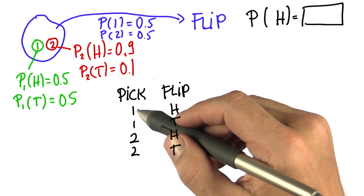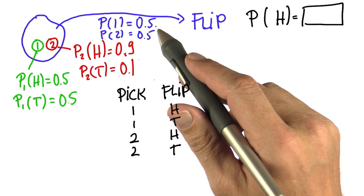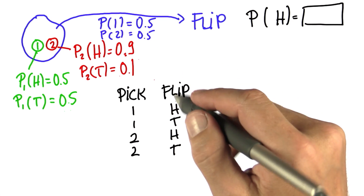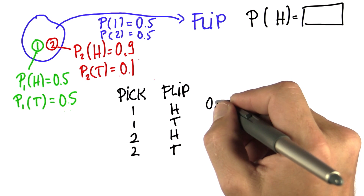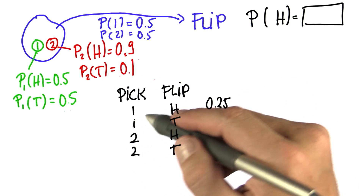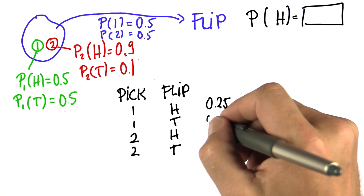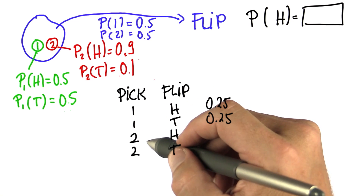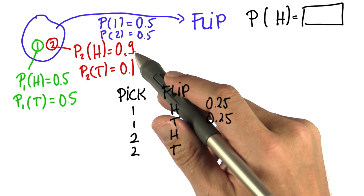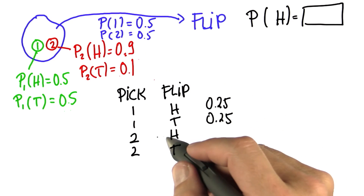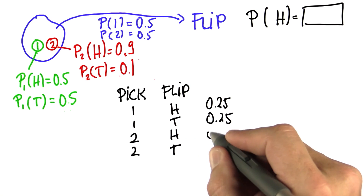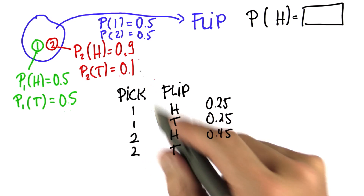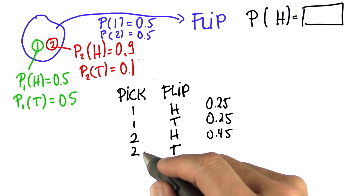Picking coin one has a probability of 0.5, and once I pick the fair coin, the probability of heads is also 0.5, making it 0.25. The same is true for picking the fair coin and expecting tails. As for the unfair coin, picked with 0.5 chance, we get a 0.9 chance of heads, so 0.5 times 0.95 gives 0.45.